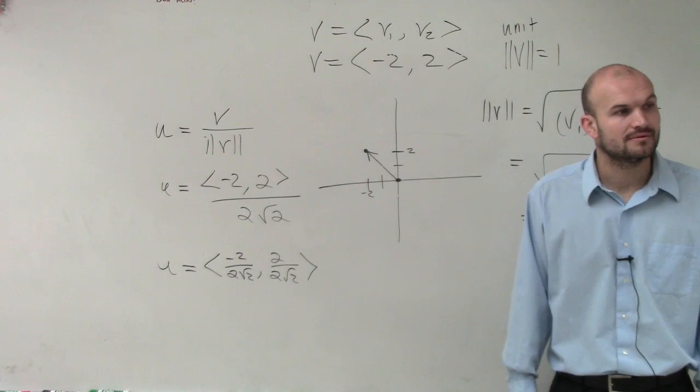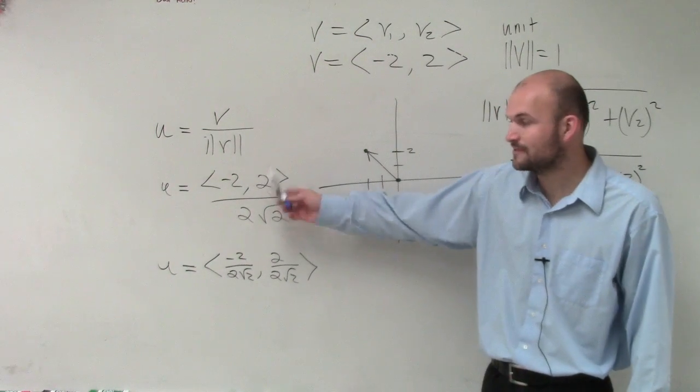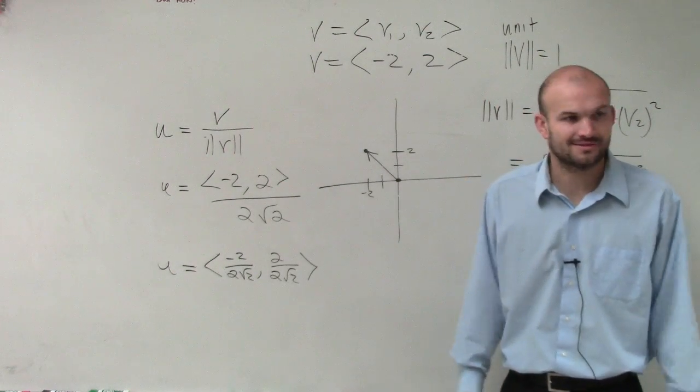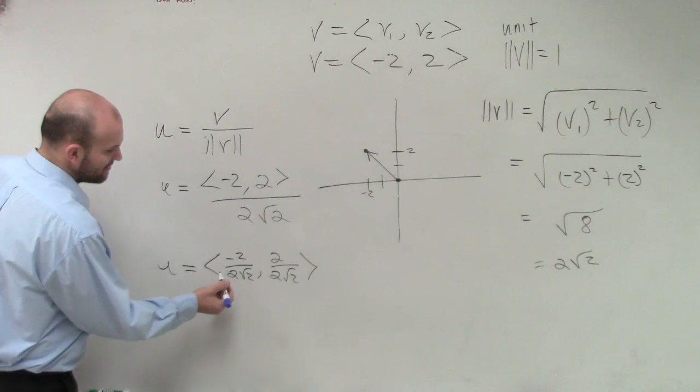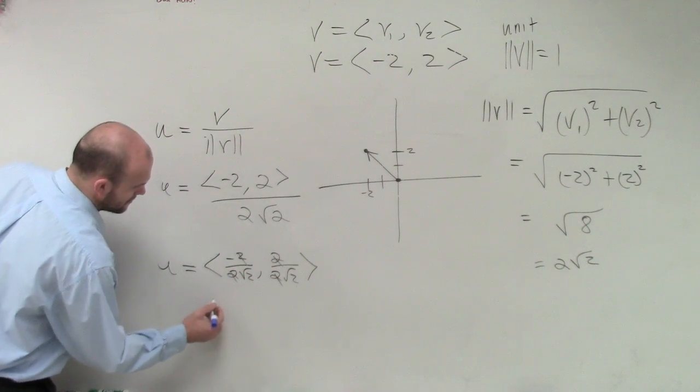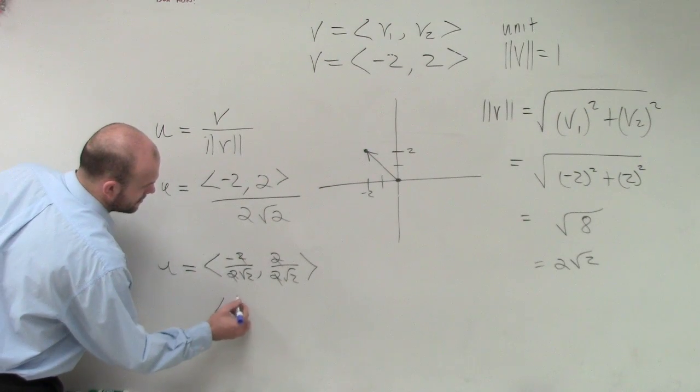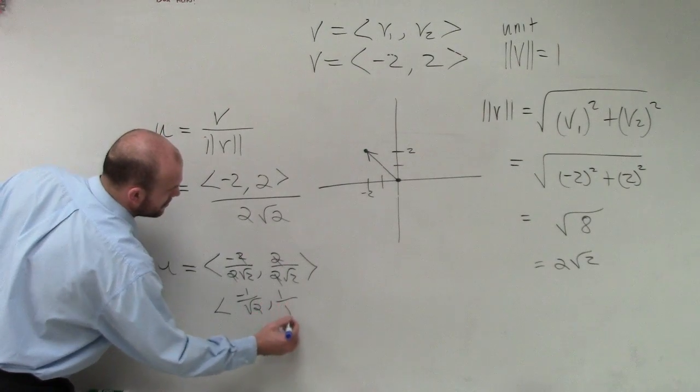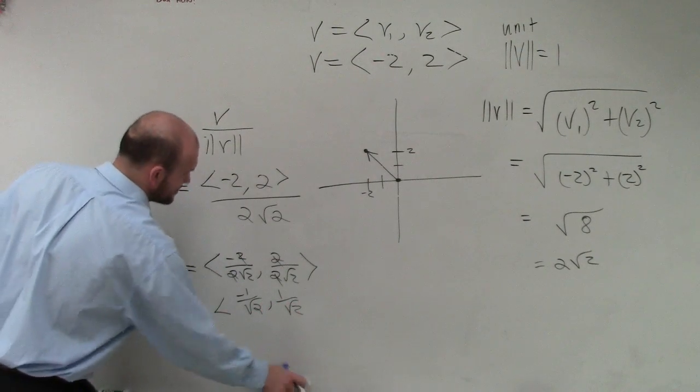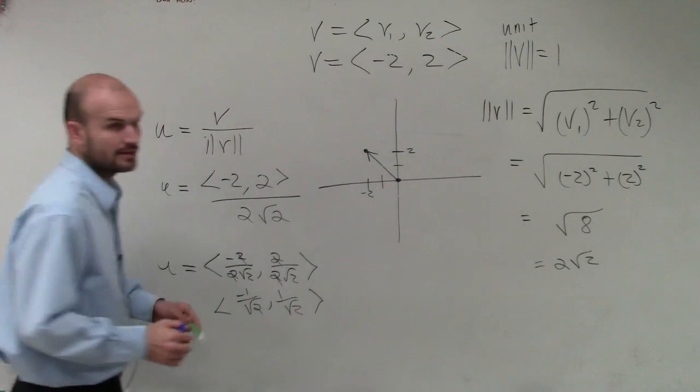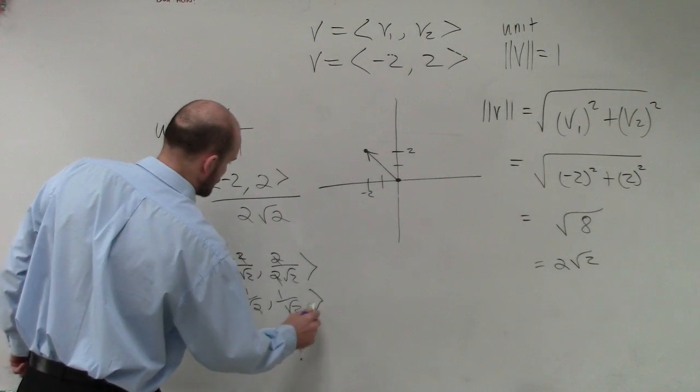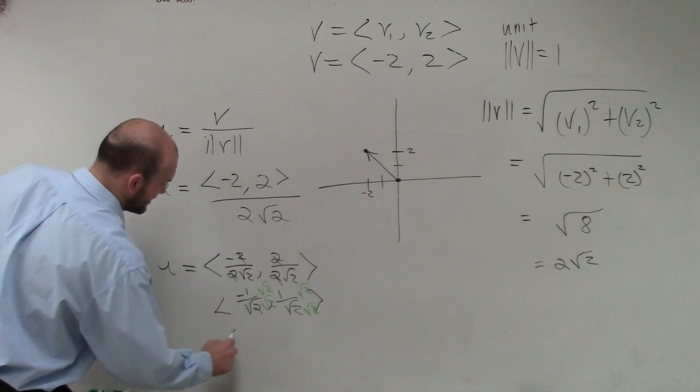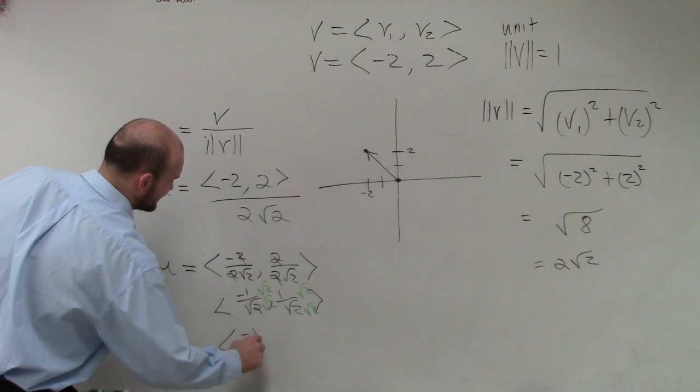All I did was I took my vector, divided it by its magnitude. Then we divide this both into both our components. Now, by simplifying this, you're going to rationalize the denominators, square root of 2 over square root of 2. And you guys are going to get a horrible flashback here.